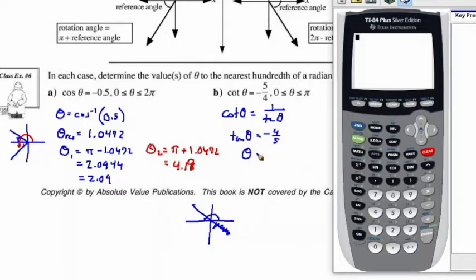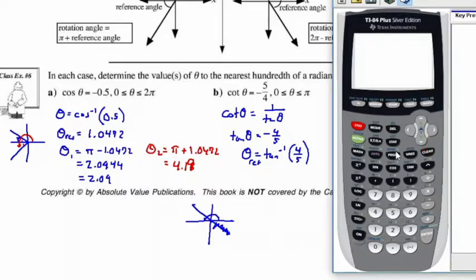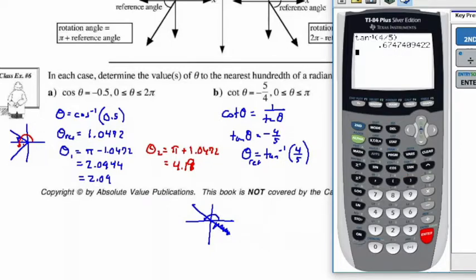The reference angle is going to be the tan inverse of the value of the trig ratio. To get the reference angle, we disregard the negative, so we just use 4 over 5. Then we find the reference angle using second tan of 4 divided by 5, and that's equal to 0.6747. So when we look at this, the rotation angle is going to be pi minus that reference angle.